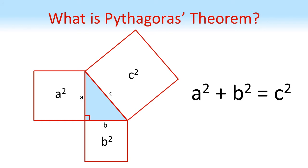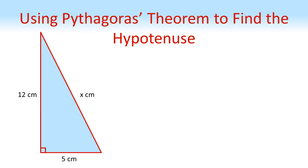Now we can use this equation to find missing sides on right-angled triangles. To start, we're going to use Pythagoras' Theorem to find the missing hypotenuse length. Here we've got a triangle where the shorter sides are 12 centimetres and 5 centimetres, and I've labelled the hypotenuse, the longest side, as X. So Pythagoras' Theorem is A squared plus B squared equals C squared.